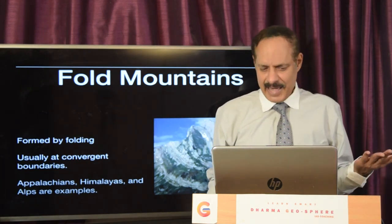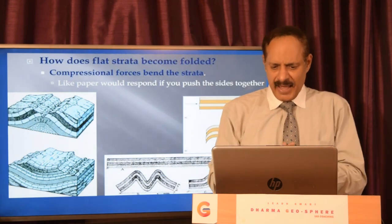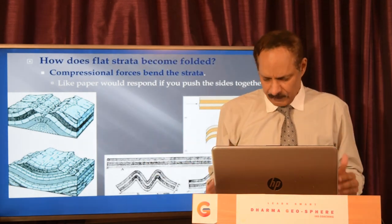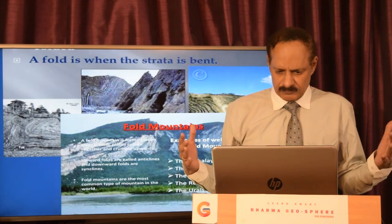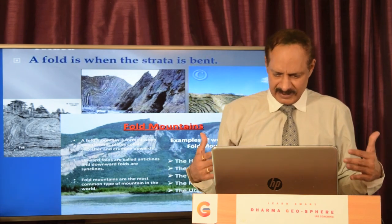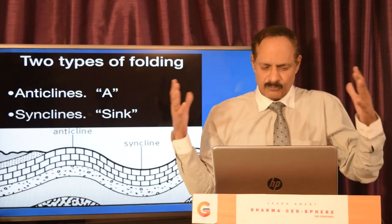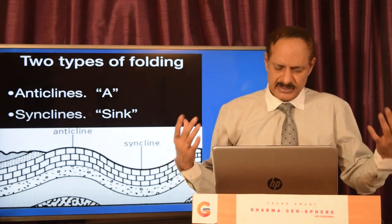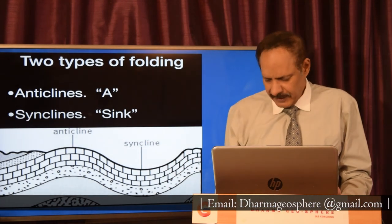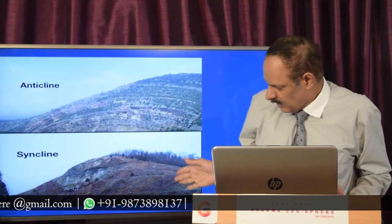This is the normal strata and how it gets slowly folded because of plate movements — it gets compressed, just like how a paper would respond if you push it from both sides together. Folding occurs where the strata gets bent due to compression or movement of the plates. The Himalayas, Alps, Andes, Rockies, and Urals are all classified as fold mountains. There are two types of folding: an anticline, which is the arching due to compression, and a syncline, which is a basin due to compression.